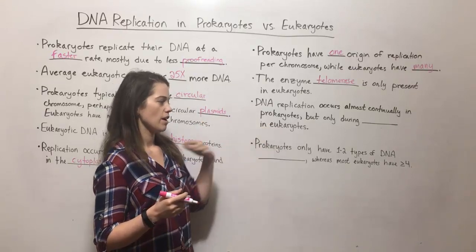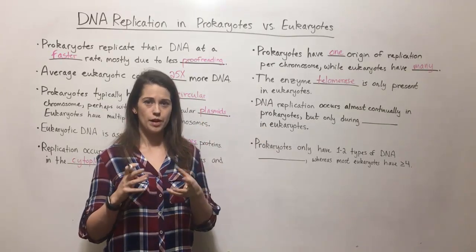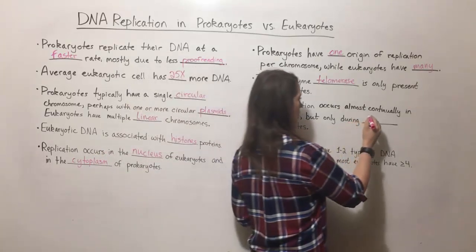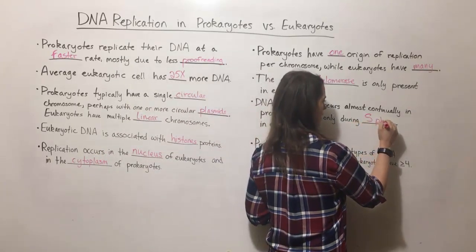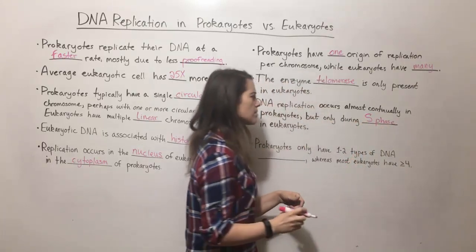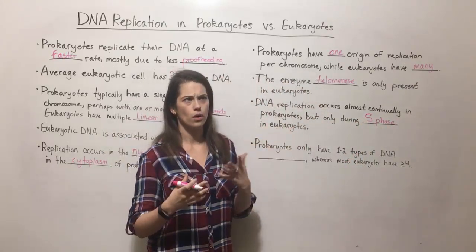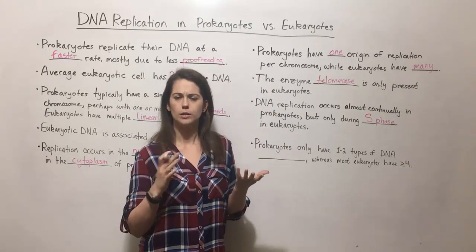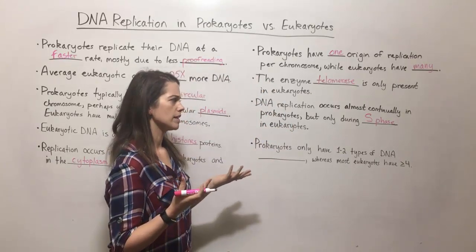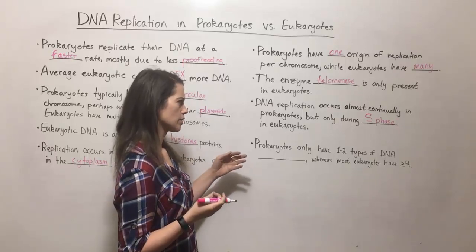In eukaryotes, however, DNA replication is confined to a very specific part of the cell cycle known as S phase, where S stands for synthesis. This is overall a relatively smaller portion of how the cell spends its time for most eukaryotic cells.